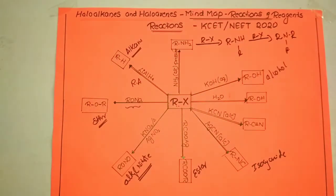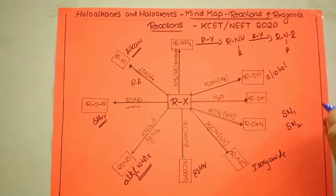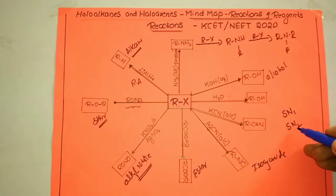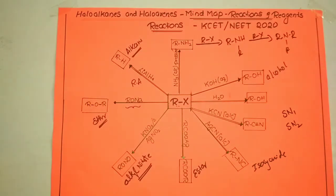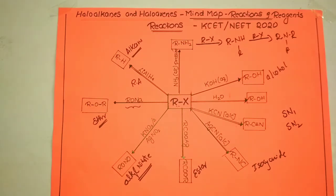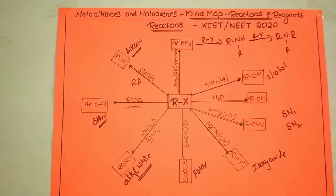The two main reactions of alkyl halide — SN1 and SN2 — have been discussed in detail in a previous video, along with previous year questions. Some reactions are nucleophilic substitution reactions and some are elimination reactions. All the reagents have been combined here with the goal of helping you understand the role of each reagent.